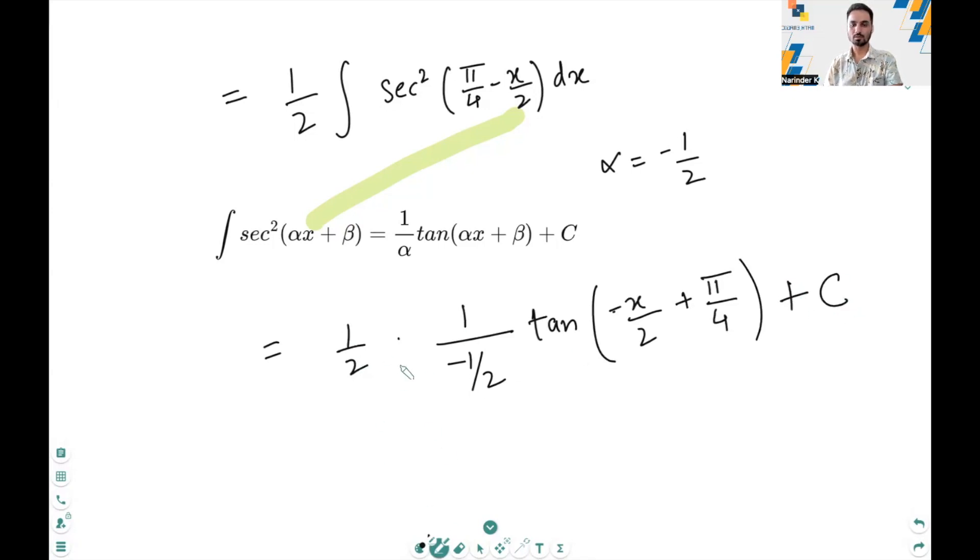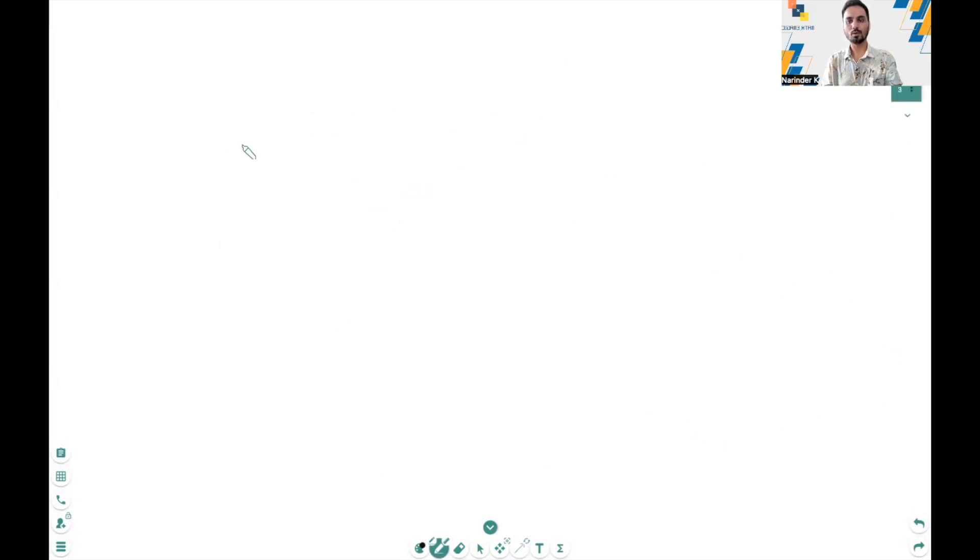We can cancel out half, so we are left with minus tan minus x over 2 plus pi over 4 plus c. So the original equation becomes minus tan minus x over 2 plus pi over 4 plus c equals tan x over 2 plus a plus b.